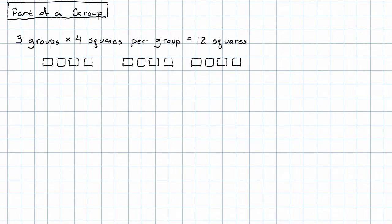Three groups times four squares per group equals 12 squares, right? So we take how many groups times how big each group is in order to find out what we have all together.